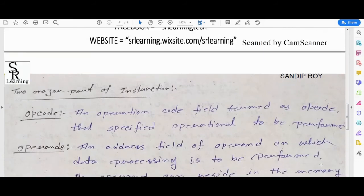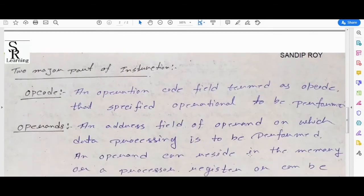So next is the major part of instruction. What are the major parts of instruction? These two parts are opcode and operand - these two are the major parts in instructions. Let's see what opcode is: opcode is a operation code. An operation code field termed as opcode specifies the operation to be performed. By the opcode we understand what specified operation will be performed.